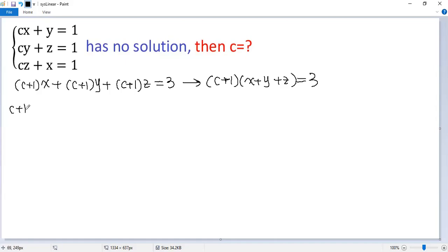If c plus 1 is non-zero, then both sides divided by c plus 1. So we get x plus y plus z equals 3 over c plus 1.